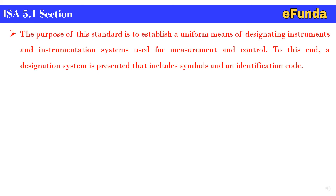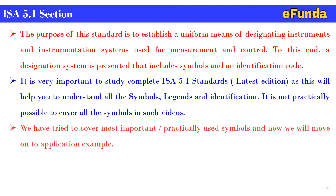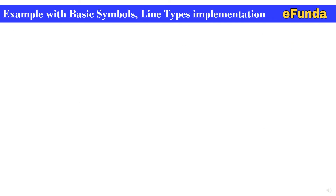The purpose of ISA 5.1 standard is to establish a uniform means of designating instruments and instrumentation systems used for measurement and control. A designation system is presented that includes symbols and identification codes. It is important to study the complete ISA 5.1 standard — the latest edition — as it covers all symbols, legends, and identification. It is not practically possible to cover all symbols in such videos, so we have covered the most important and practically used symbols. Now we will move on to application examples showing implementation of these symbols.